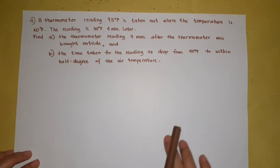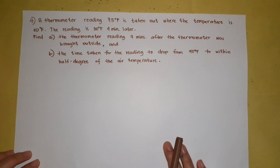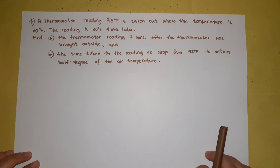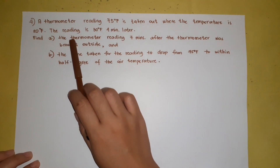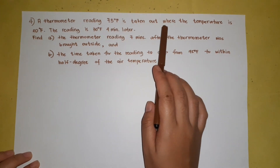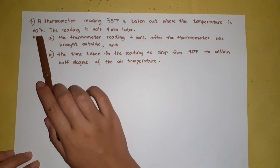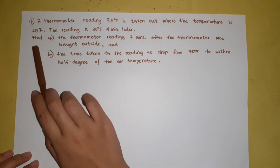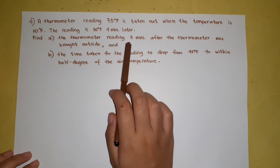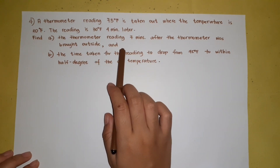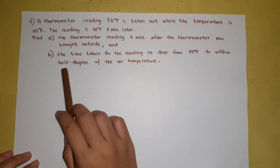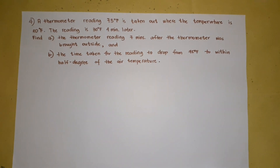Hello, in this video we are going to solve an application problem on first order differential equations. We have here a problem using Newton's Law of Cooling. A thermometer reading 75 degrees Fahrenheit is taken outside where the temperature is 20 degrees Fahrenheit. The reading is 30 degrees Fahrenheit four minutes later. Find: (a) the thermometer reading seven minutes after the thermometer was brought outside, and (b) the time taken for the reading to drop from 75°F to half a degree of the air temperature.